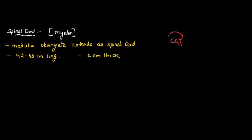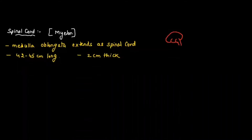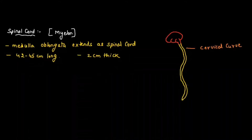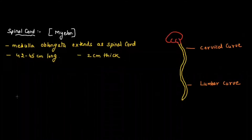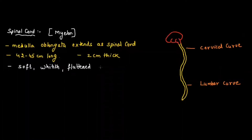The brain gives rise to an S-shaped curve, and this S-shaped curve is basically the spinal cord. There are two curves that you are going to observe: the first curve is the cervical curve and the second curve is the lumbar curve. The end of the spinal cord is known as the conus medullaris.